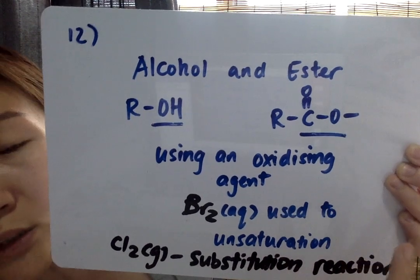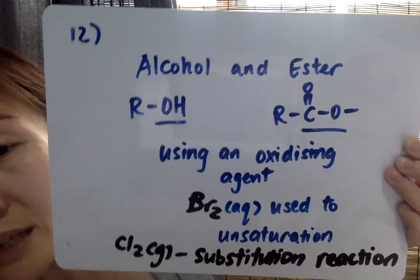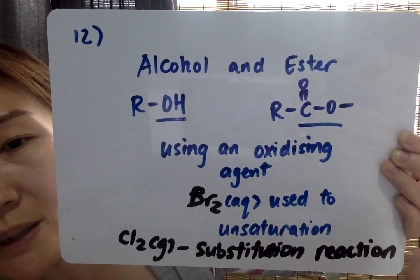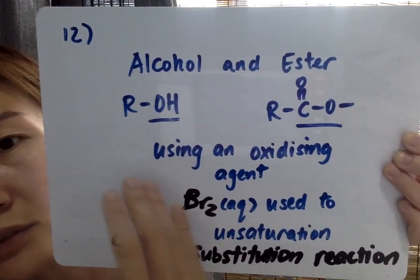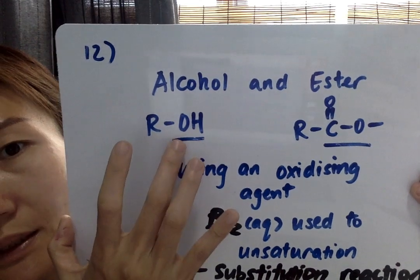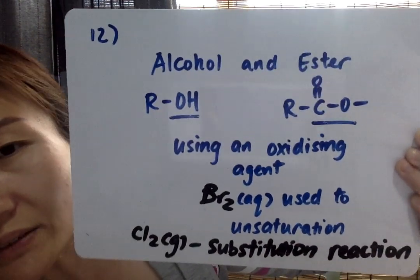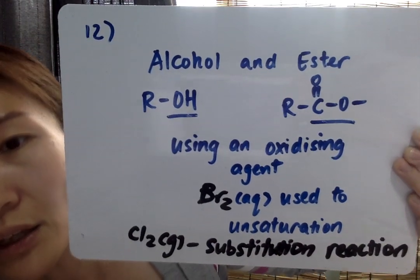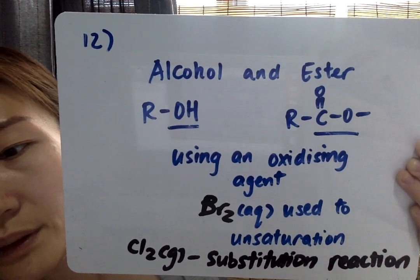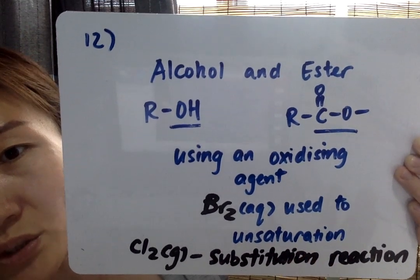The correct answer is using an acidified oxidizing agent such as potassium dichromate, K₂Cr₂O₇, which is orange in color. In the presence of primary and secondary alcohols, it undergoes oxidation and changes color from orange to green. For primary alcohols, the alcohol becomes an aldehyde and then a carboxylic acid. For secondary alcohols, the alcohol changes directly into a ketone.